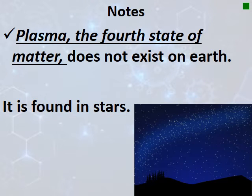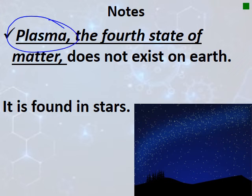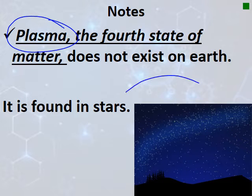The fourth state of matter is called plasma. Plasma does not exist on Earth — it is mainly found in stars.